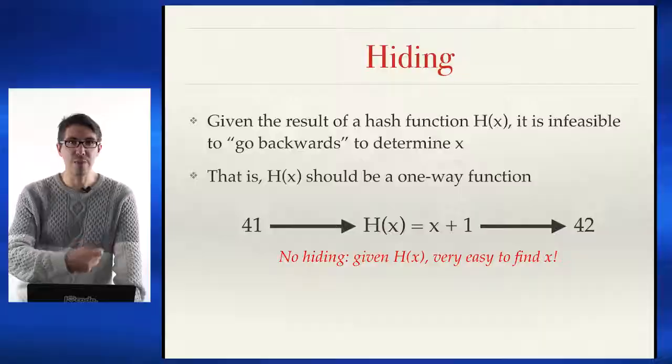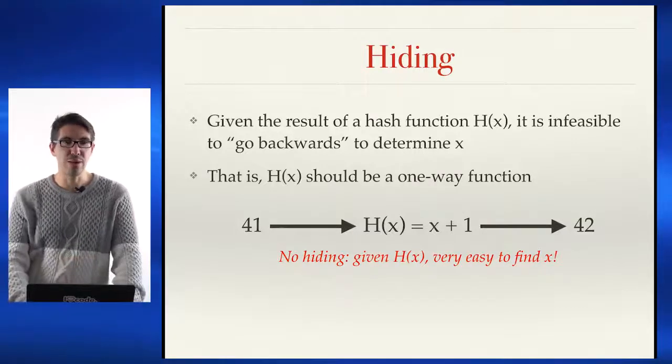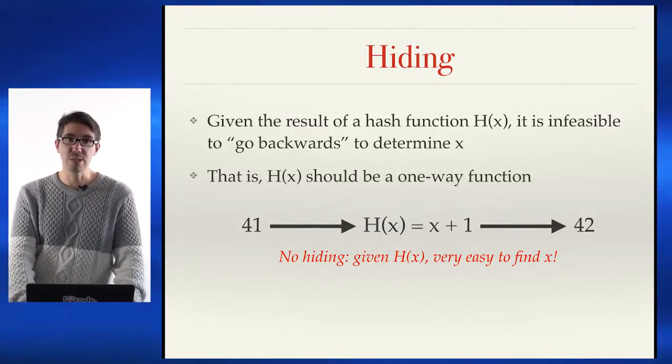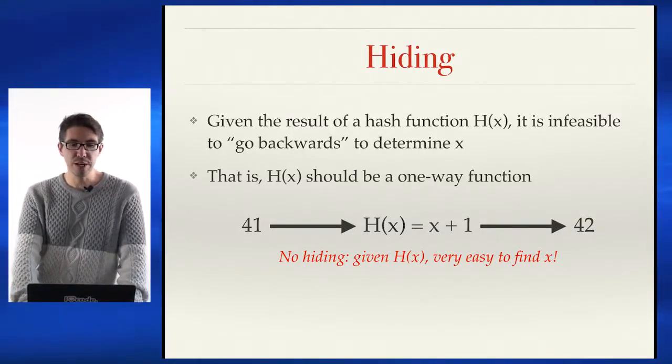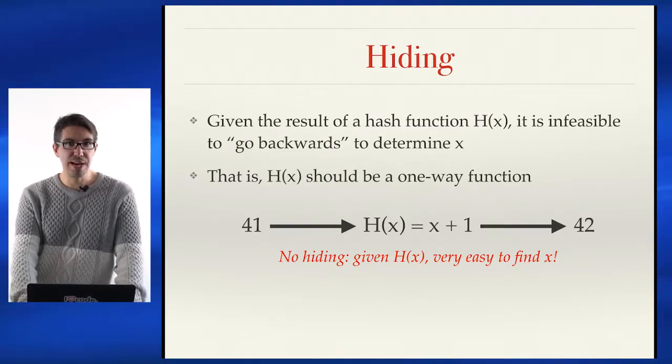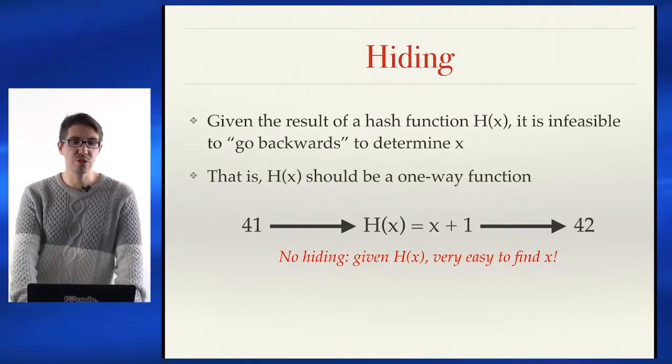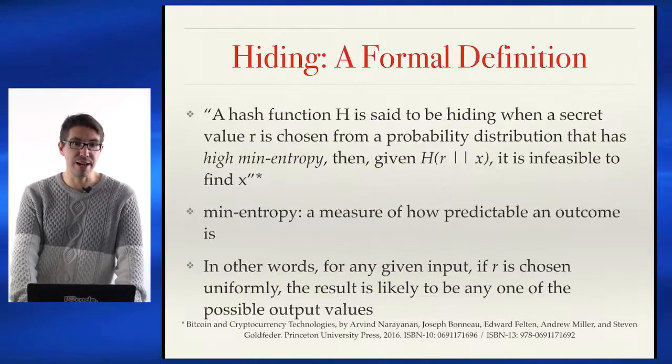It is very simple that if I tell you the result of this is 42 and you know the algorithm, it should be very easy for you to figure out that if I'm adding one, to do the inverse I just subtract one. So here we have no hiding — given h of x, it is trivial to find x.